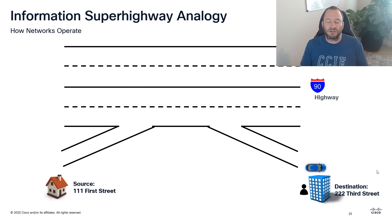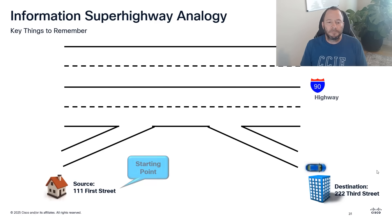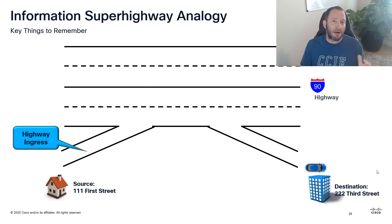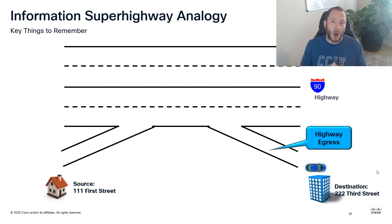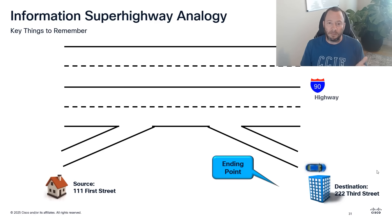A couple of things to look at in this analogy: you have a starting point or starting address, your highway ingress, the highway itself as your route of travel, your off-ramp, and your ending point.